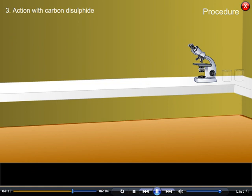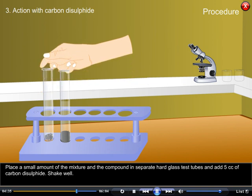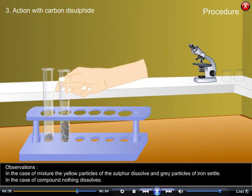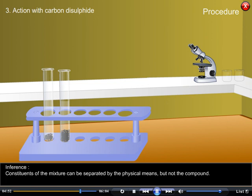3. Action with carbon disulphide: Place a small amount of the mixture and the compound in separate hard glass test tubes and add 5 cc of carbon disulphide. Shake well. Observations: In case of mixture, the yellow particles of sulphur dissolve and grey particles of iron settle. In case of compound, nothing dissolves. Inference: Constituents of mixture can be separated by physical means but not the compound.